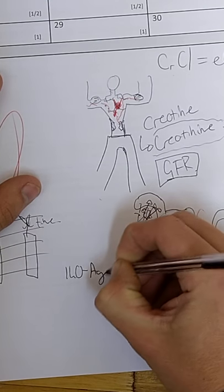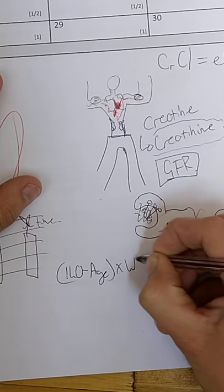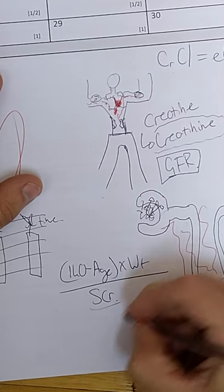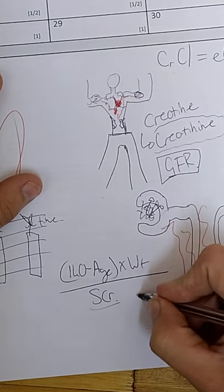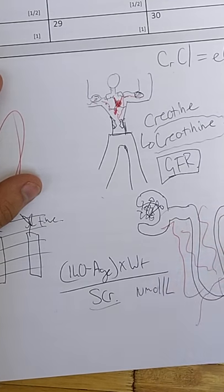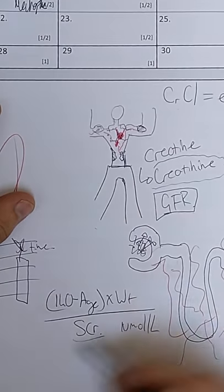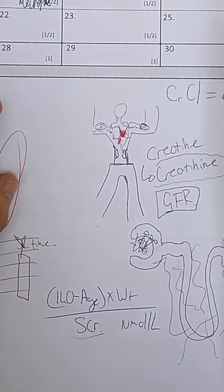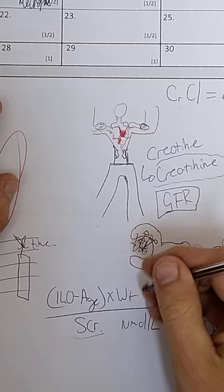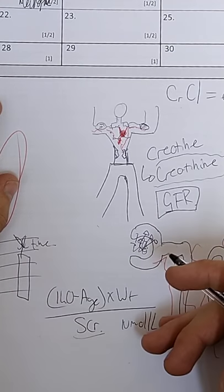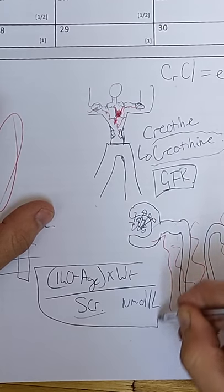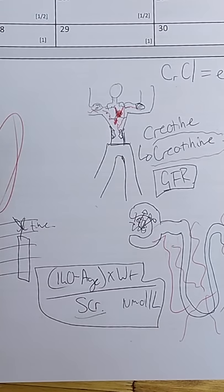And all of this, all of the processes happening here, is basically defined in this formula. So 140 minus age times weight over SCR. And what is SCR as well? It's creatinine measured in micromoles per liter. This is the most important formula in South Africa. If you go to America or Europe or Australia or wherever, it will be different.